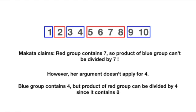If we replace 7 with let's say 4, there's only one 4 among the numbers 1 to 10, so one group of numbers contains 4 but the product of all numbers in another group can be divisible by 4, unlike our case with the 7 above. So why does Makata's argument hold when the number is 7 instead of 4?